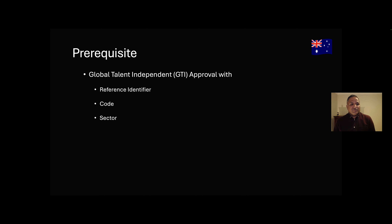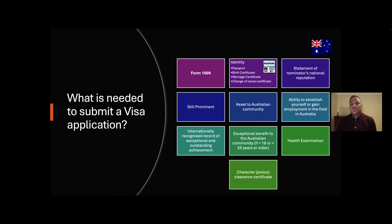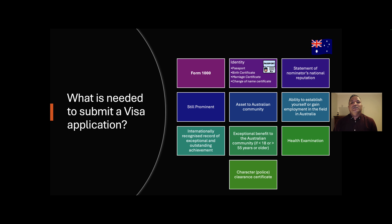This approval email consists of three things: it gives us a reference identifier using which we can apply for the permanent residence; it also gives us a code and the sector for which we can apply based on our expression of interest. So assuming you went through the process of applying the expression of interest, you had a successful EOI and received that email where the authorities requested you to apply for the PR — these are the list of documents which are required for submitting the visa application.